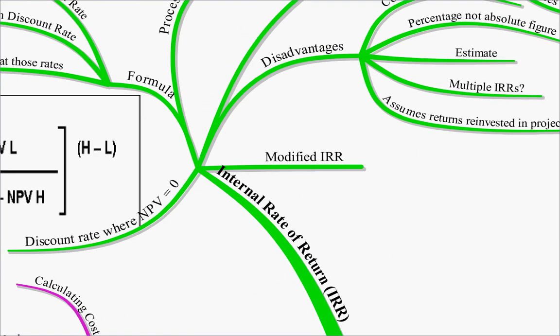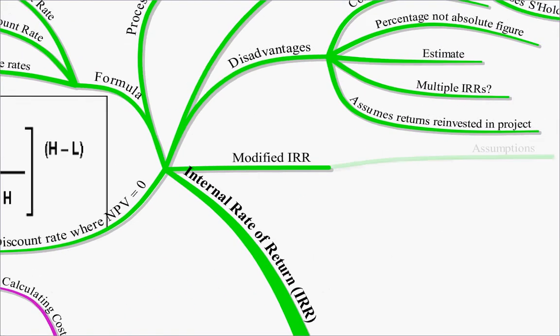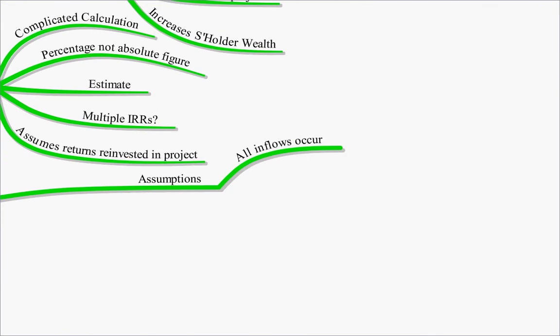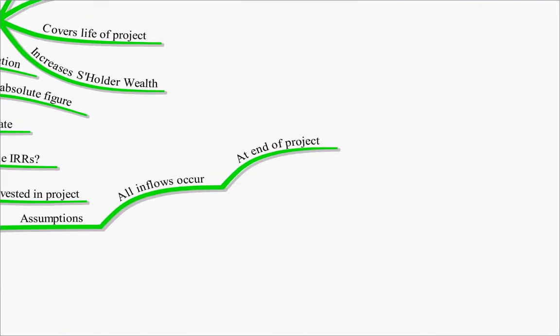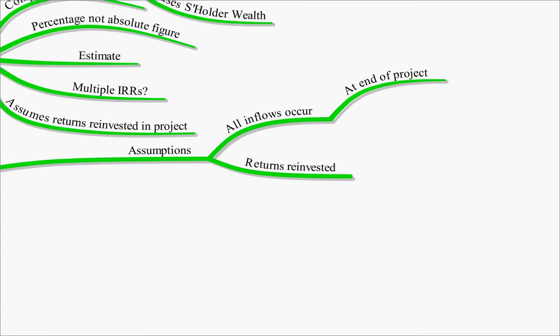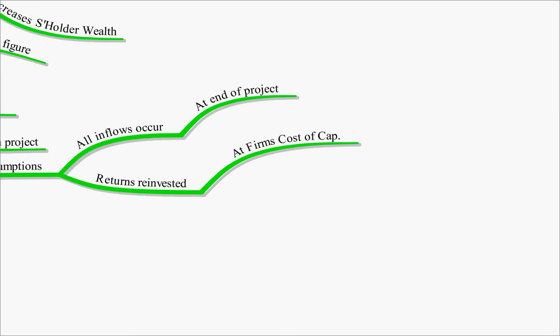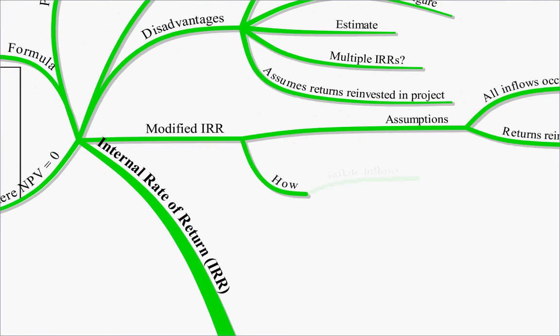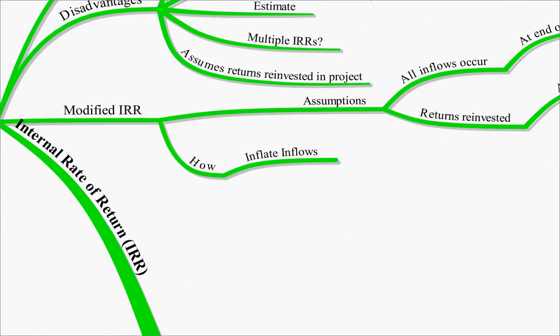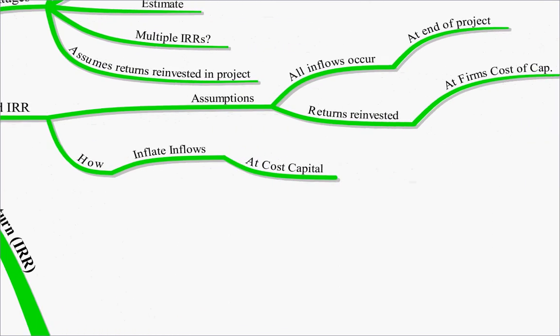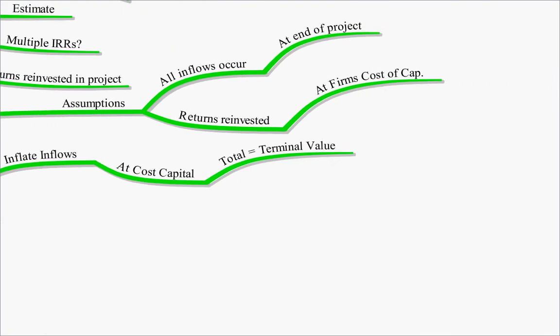The modified internal rate of return seeks to address some of these. The assumptions of it are that all inflows occur at the end of the project. And what that means is that the assumption is that returns are reinvested at the firm's cost of capital, as opposed to into the project again. How do we do it? Well, we inflate the inflows, i.e. all the cash inflows, at the firm's cost of capital. And this gives us our terminal value, i.e. the future value of all of our inflows, if we were to get them all at the end of the project.